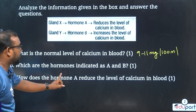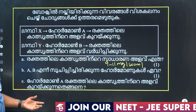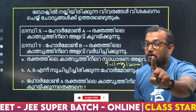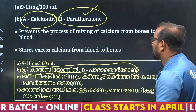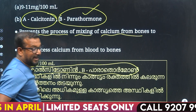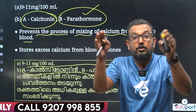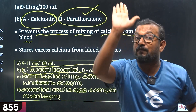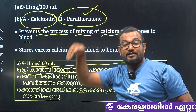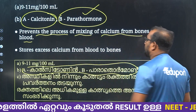How does hormone A reduce the level of calcium in the blood? How does hormone A reduce the amount of calcium in the blood? Prevent the process of mixing calcium from bone to blood. How does hormone B reduce the calcium in the blood? Blood to bone.